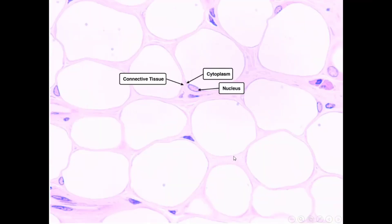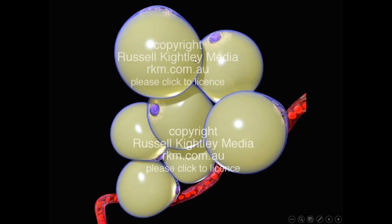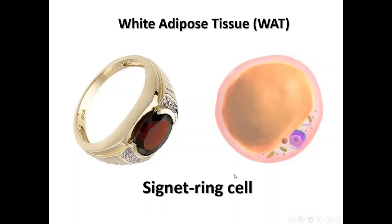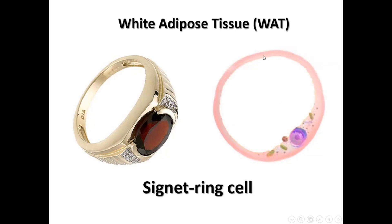In another picture of adipose tissue, the extracellular matrix is preserved very well around the cells. You can see the peripheral nucleus and one big lipid droplet inside the cell. The appearance of the white adipose cells is very similar to a signet ring, especially when the lipid is removed by alcohol or xylene, leaving an empty cavity inside the cell. So we call the cells of white adipose tissue signet ring cells.